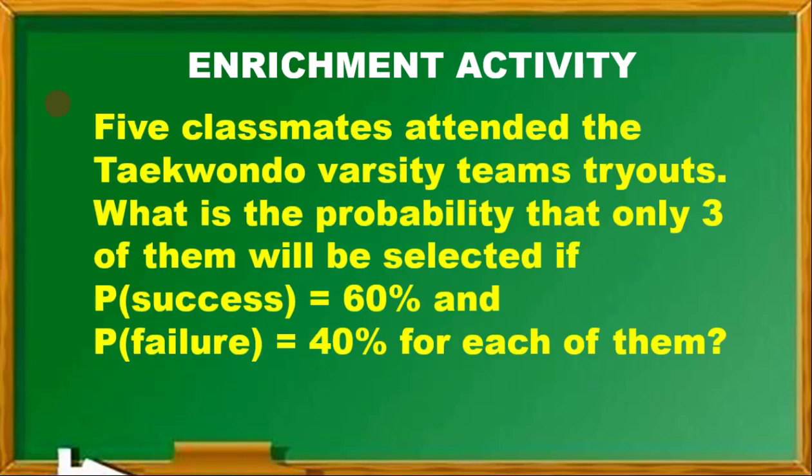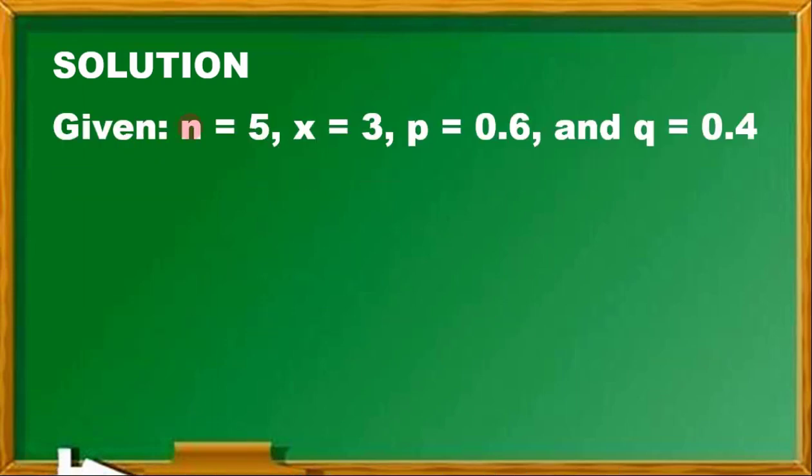Moving on to enrichment activity: 5 classmates attended Taekwondo varsity team's tryouts. What is the probability that only 3 of them will be selected if the probability of success is 60% and the probability of failure is 40% for each of them? Solution: given N is 5, 5 students, and only 3 of them will be given the chance to pass the tryouts. The probability that each of them will pass is 60% or 0.6, and the probability of failure is 0.4.